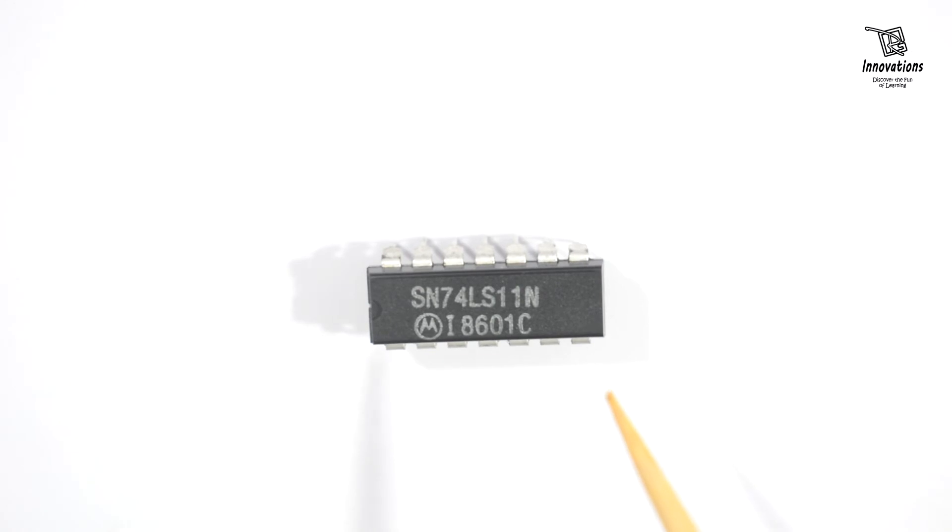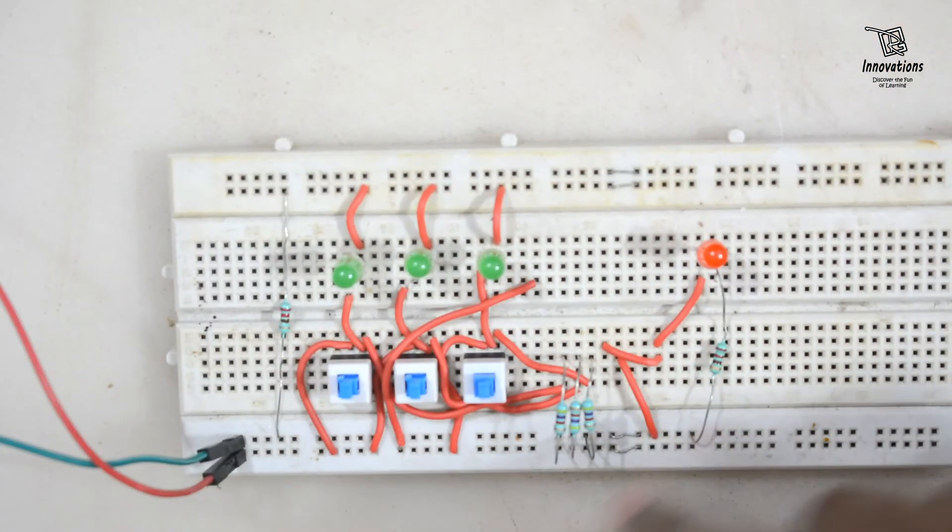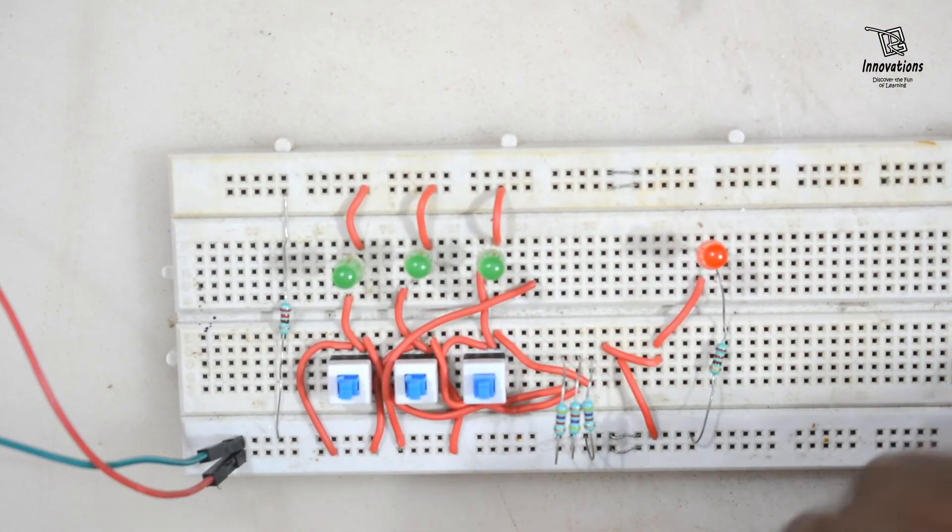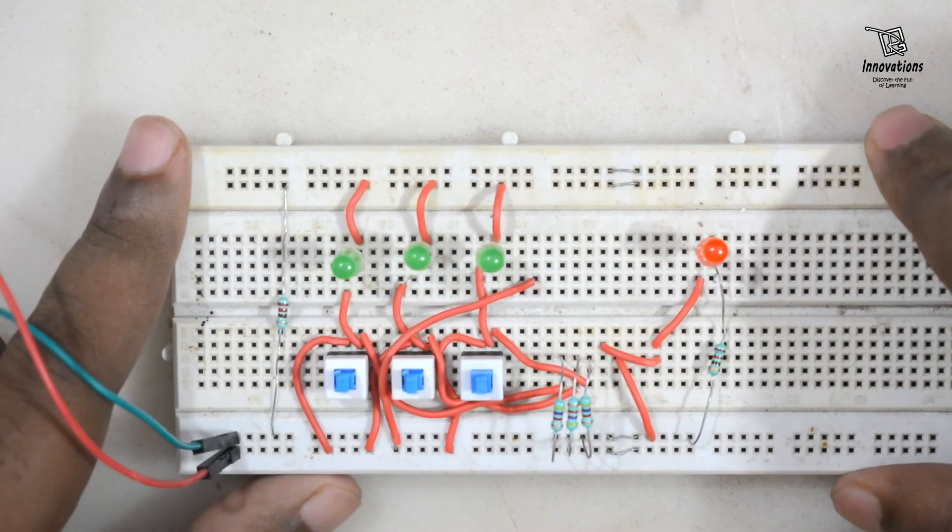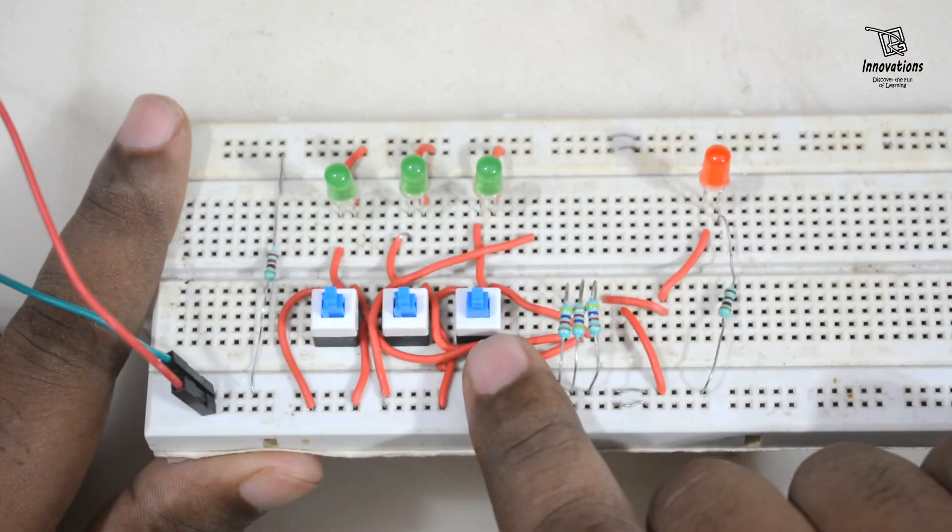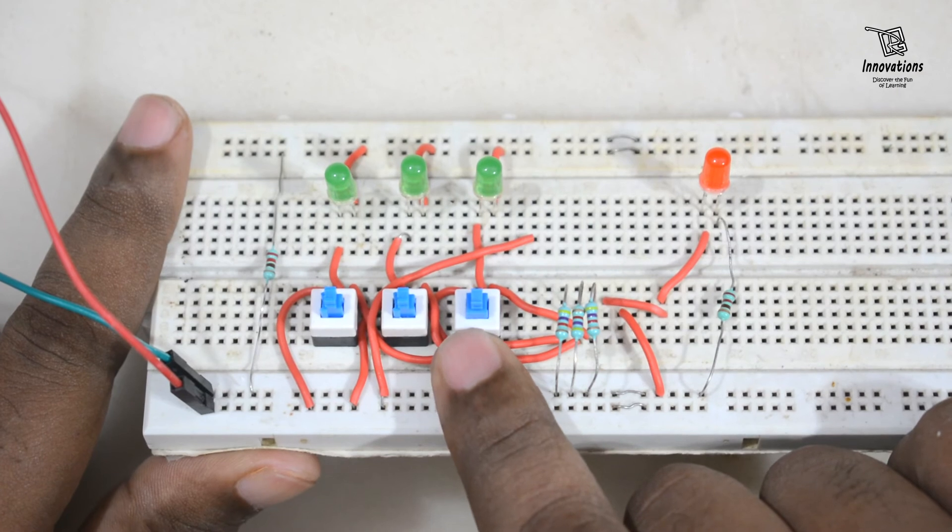So let us move on to the prototype of the AND Gate circuit. Here we have built the circuit on a breadboard. We have not put the IC yet. We will put the IC later. Let me first show you what is in the circuit.